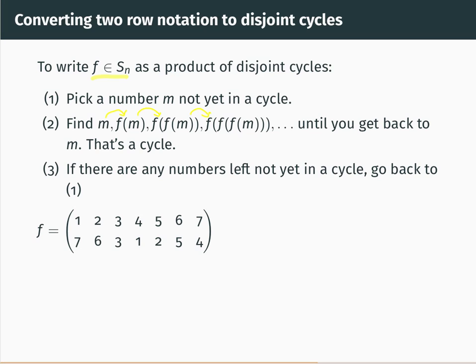Now, at step three, if there are any numbers which you haven't yet put in a cycle, then you pick one, and you go back to step one, and you just do the whole thing again. Let's see how that works in an example here. I've given the two-row notation of a permutation f there, and we're going to express f as a product of disjoint cycles.